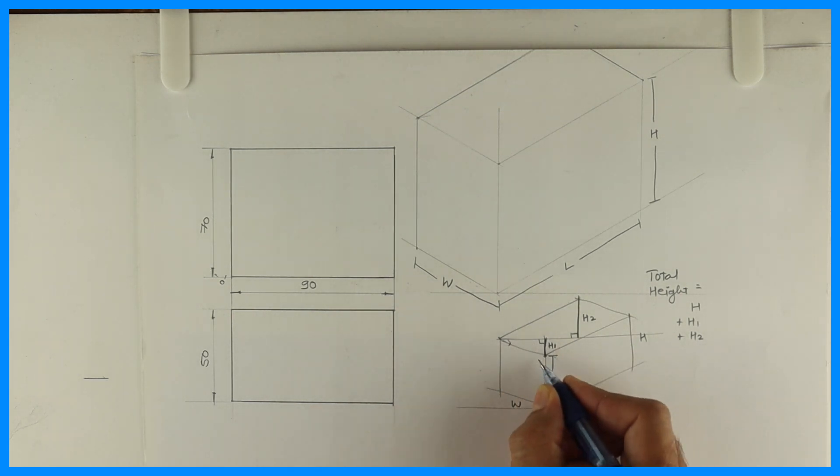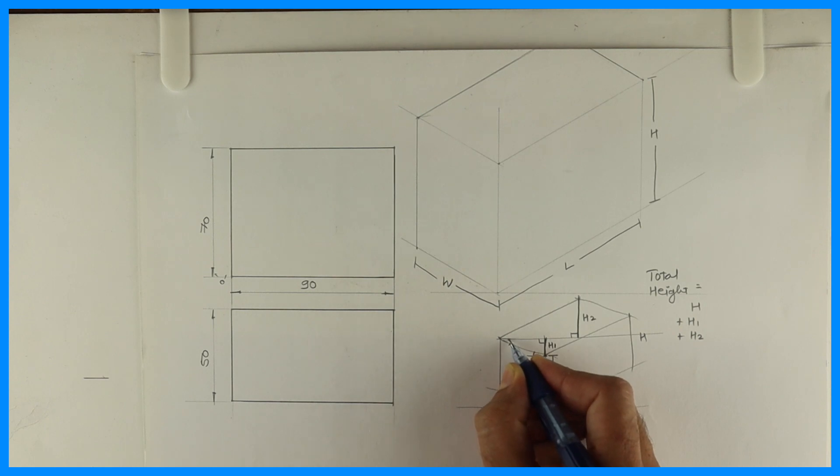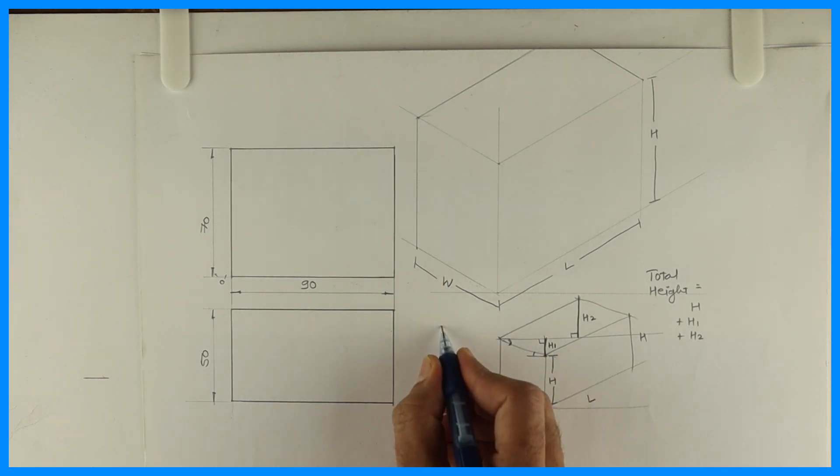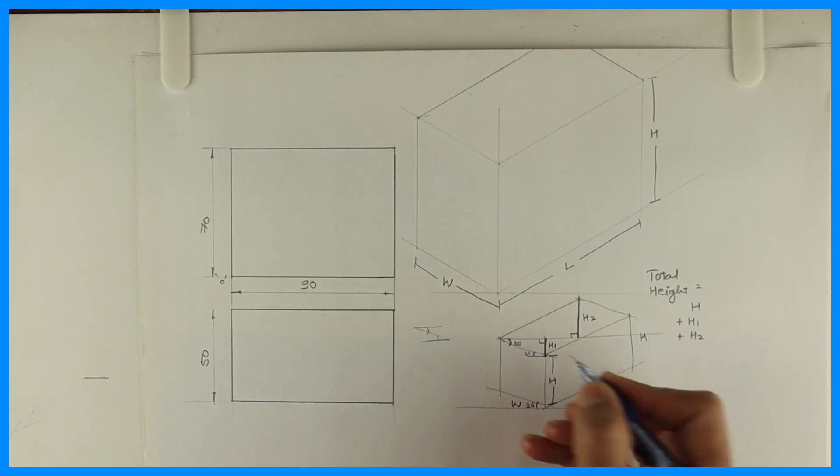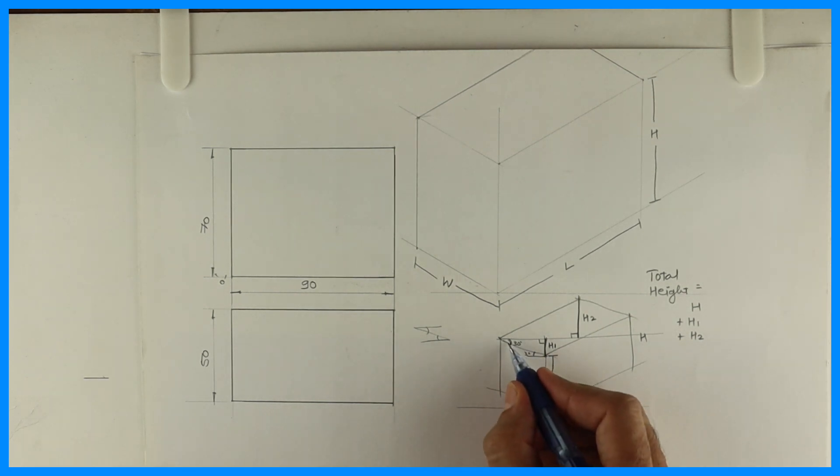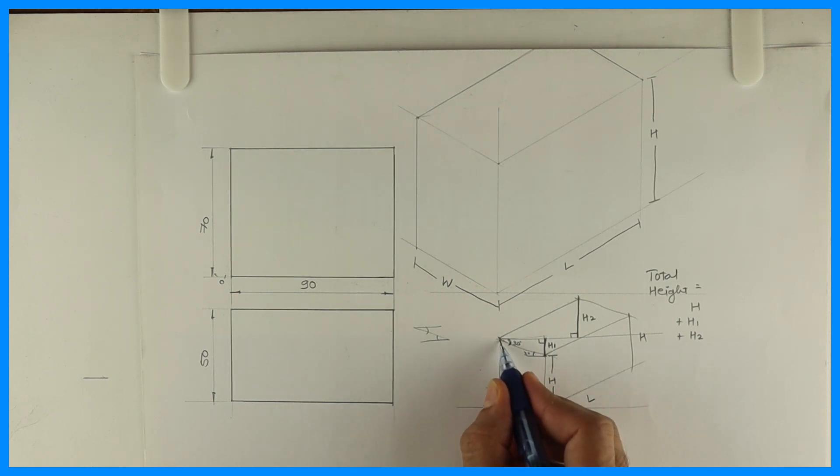Now, if you see this angle, see this. This is 30. So this will be also 30. This will be also 30 according to Z angle. Right? So this is 30. This is also 30. And this is width.